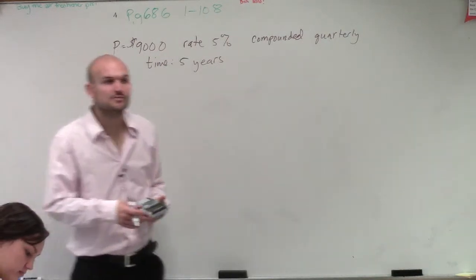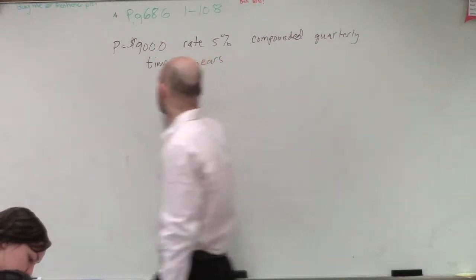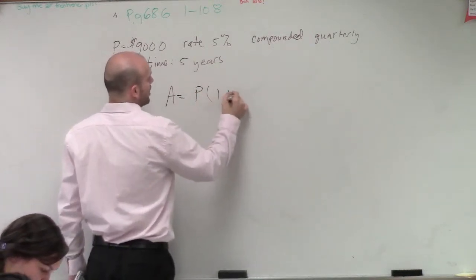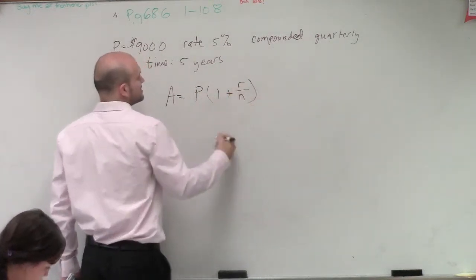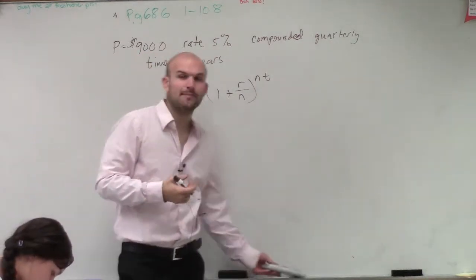We need to make sure we're using the correct formula for compound interest. The formula is A equals P times open parenthesis 1 plus R over N close parenthesis raised to the power of N times T. That is our formula for compound interest.